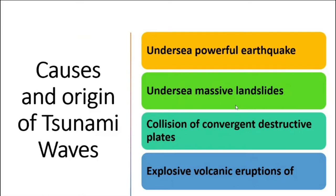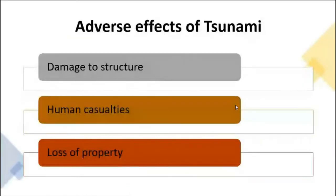The fourth cause is explosive volcanic eruptions. There are two main types of volcanoes: explosive type and fissure type. In the case of explosive volcanic eruptions on the sea floor or around islands, these can also generate tsunamis. Only violent-type volcanic eruptions can create tsunamis. These are the various reasons for the creation of tsunami waves.